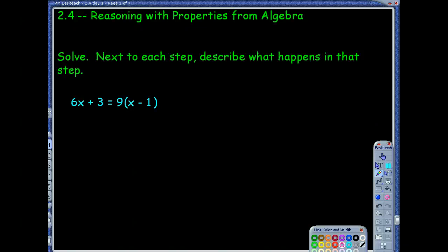Section 2.4 is where we're headed right now, and you'll notice the title: Reasoning with Properties of Algebra. The nice thing about this title is we've dealt with algebra before — we had a whole school year last year in algebra, so a lot of this is going to be just review.